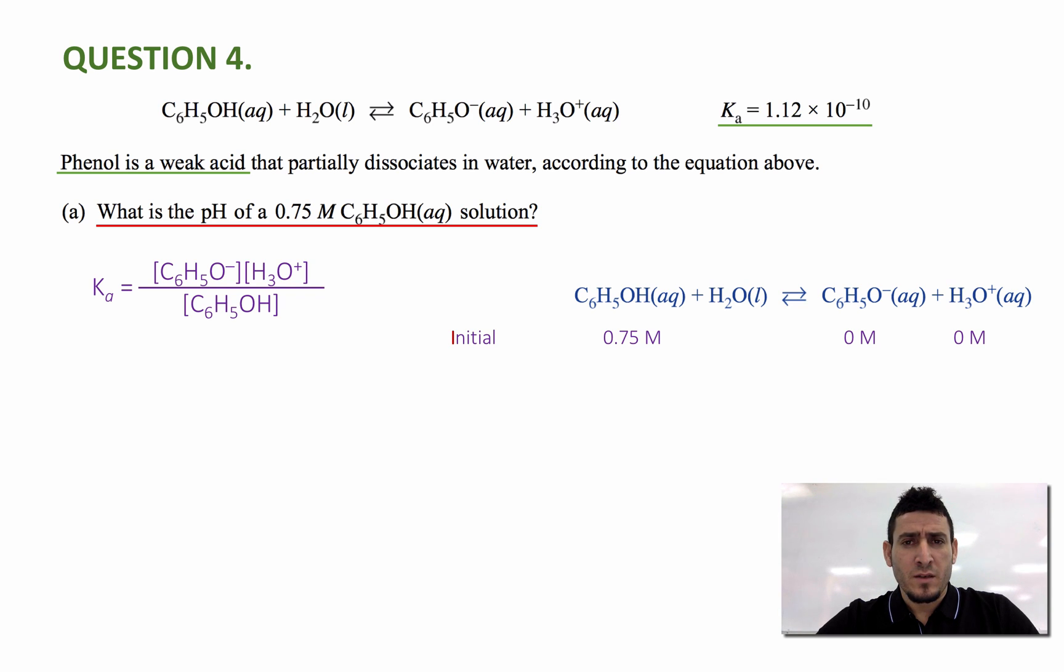After X molar of phenol reacts or dissociates in water, I will form X molar of phenolate and X molar of hydronium. At equilibrium, I will have 0.75 minus X molar for phenol and I will have X molar for phenolate and X molar for hydronium.